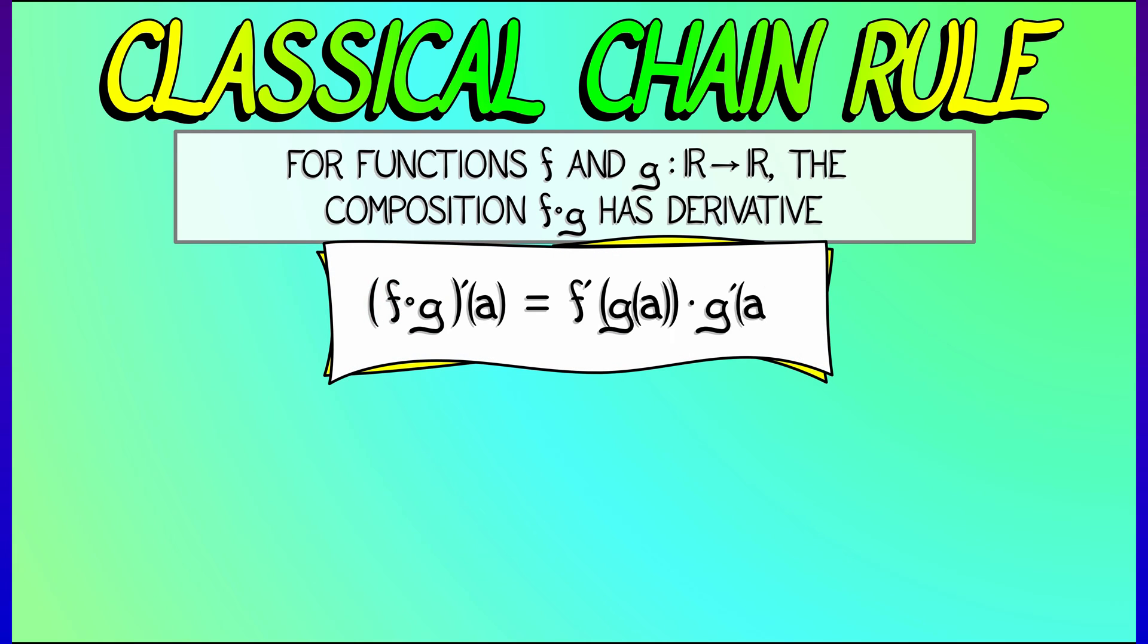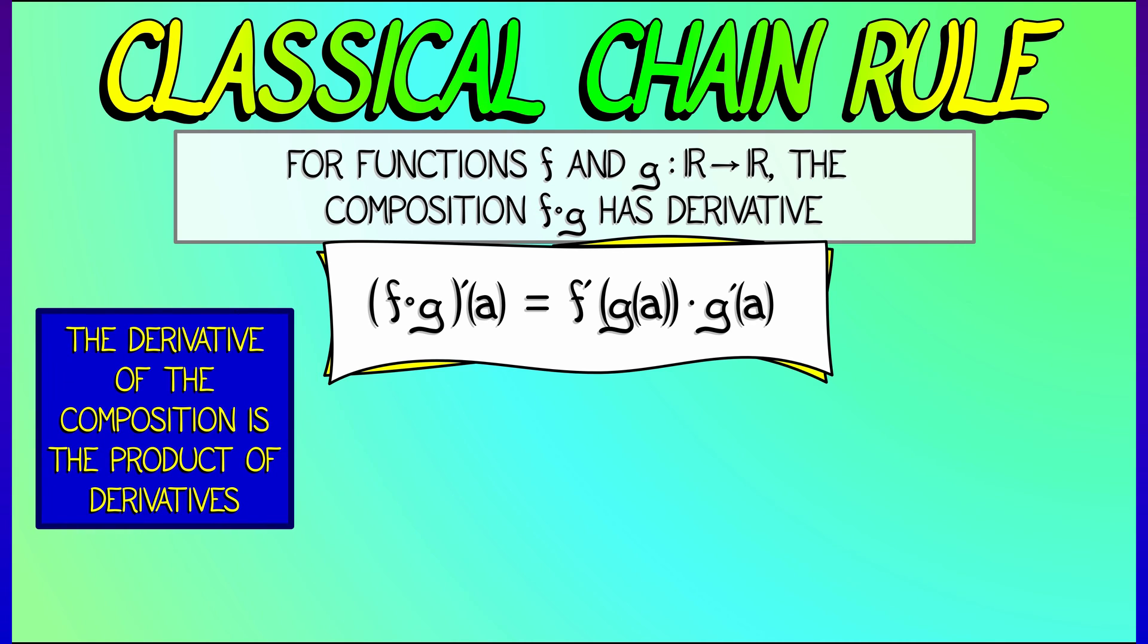I take f composed with g, look at the derivative at a. That's the derivative of f at g of a times the derivative of g at a. In other words, the derivative of the composition is the product of the derivatives.